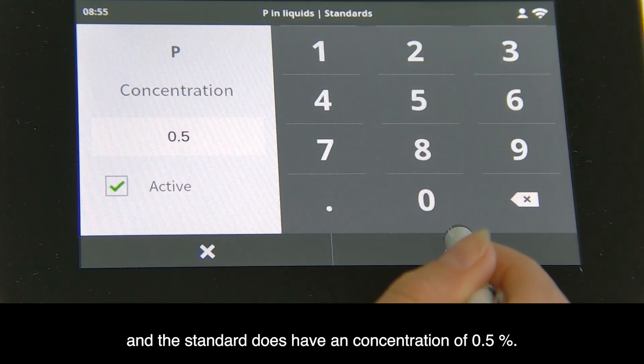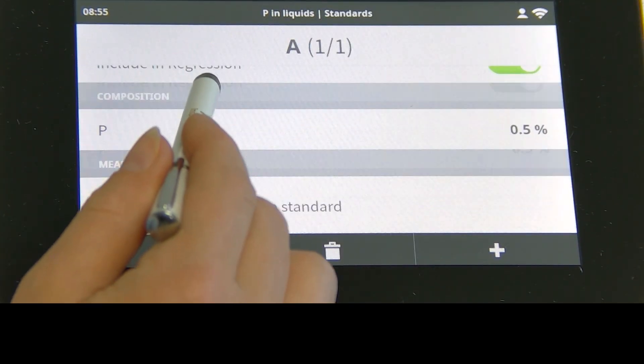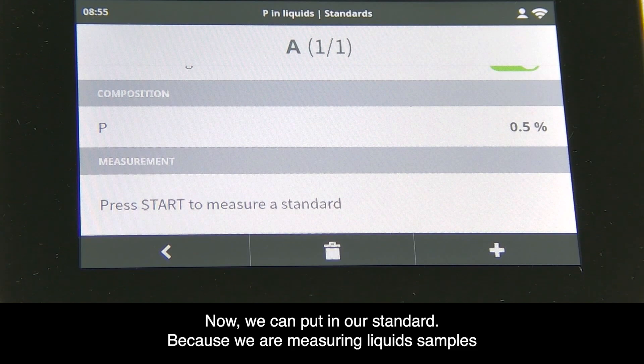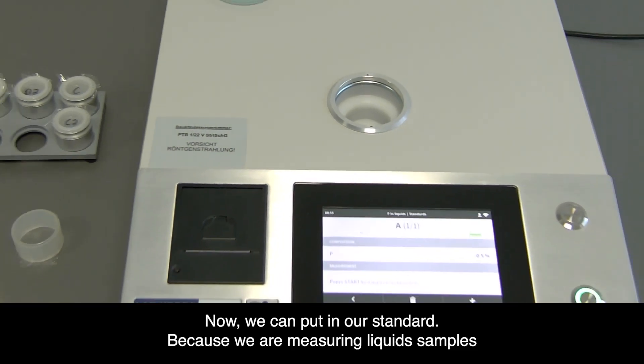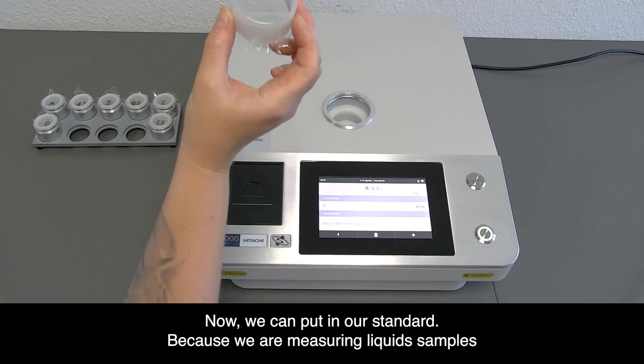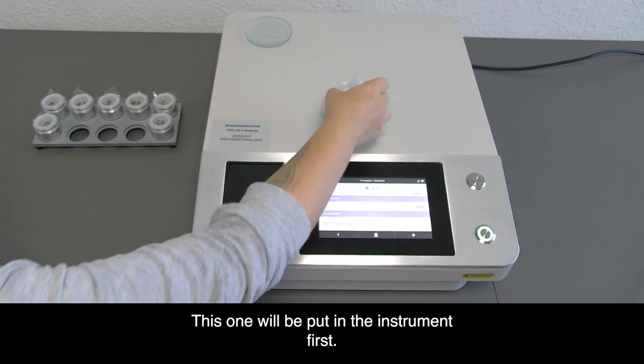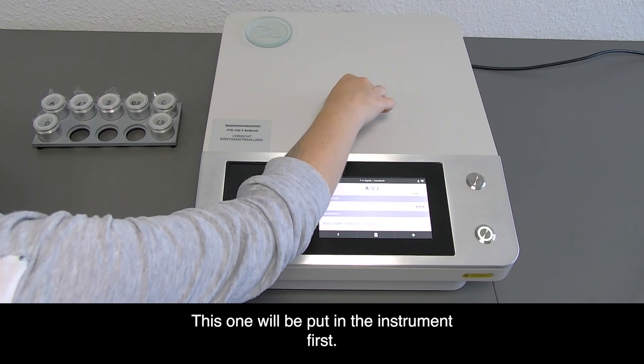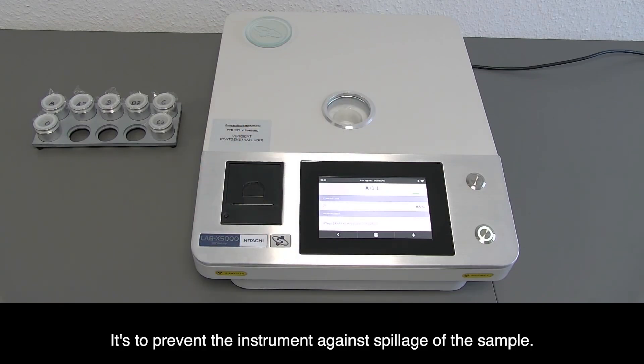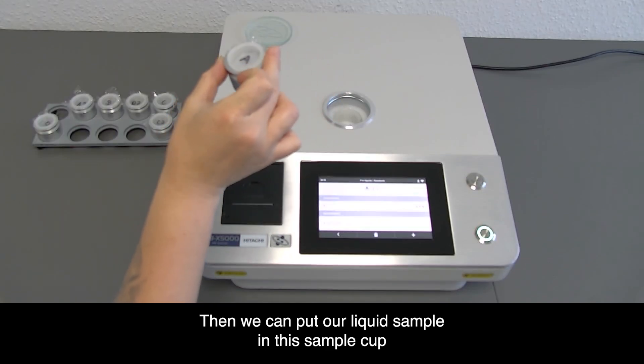We can put in our standard. Since we're measuring liquid samples, we use a secondary safety film. This is put in the instrument first to prevent spillage of the sample. Then we put our liquid sample in the sample cup.